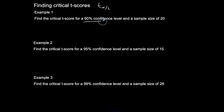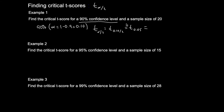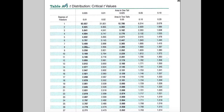Find the critical t-score for a 90% confidence level. A 90% confidence level gives me alpha = 1 minus 0.9, so alpha = 0.10. I want t of alpha over 2, which is t of 0.10 over 2, so t of 0.05. This part is the same as finding a critical z-score. We're going to finish it differently using Table A3.